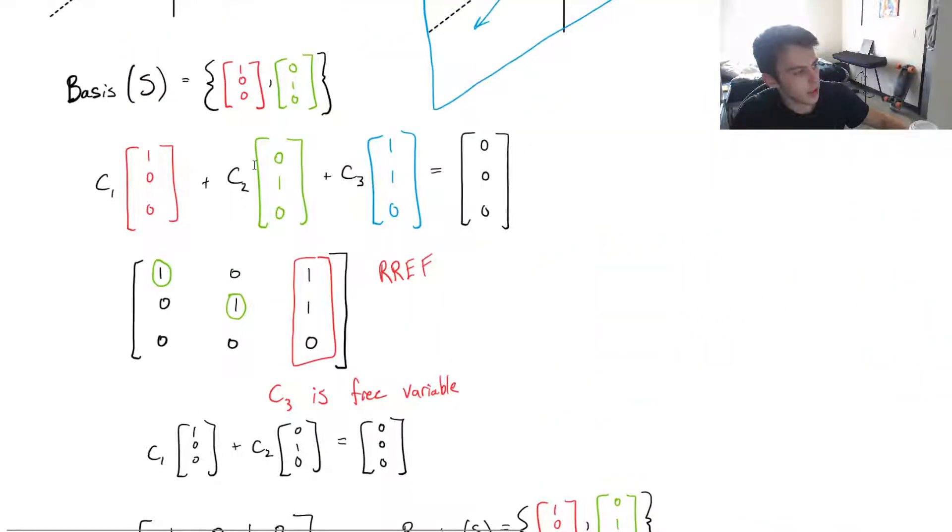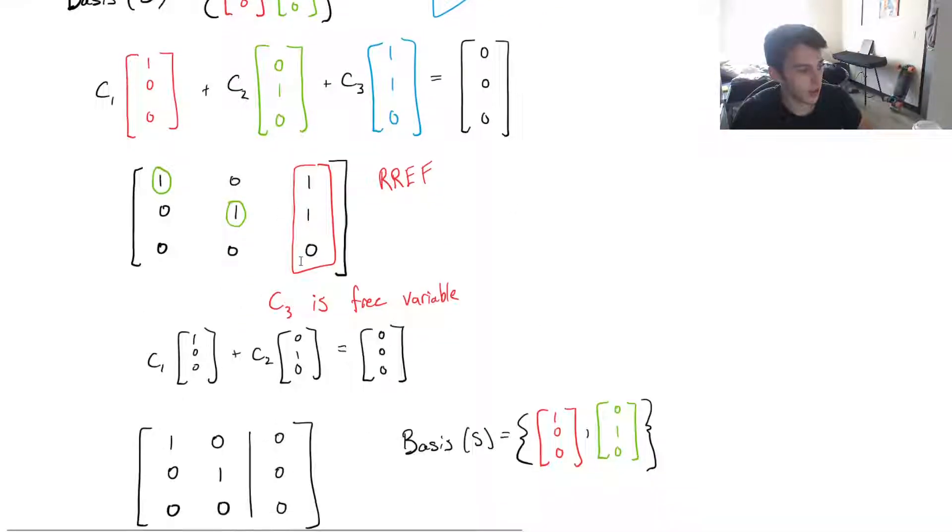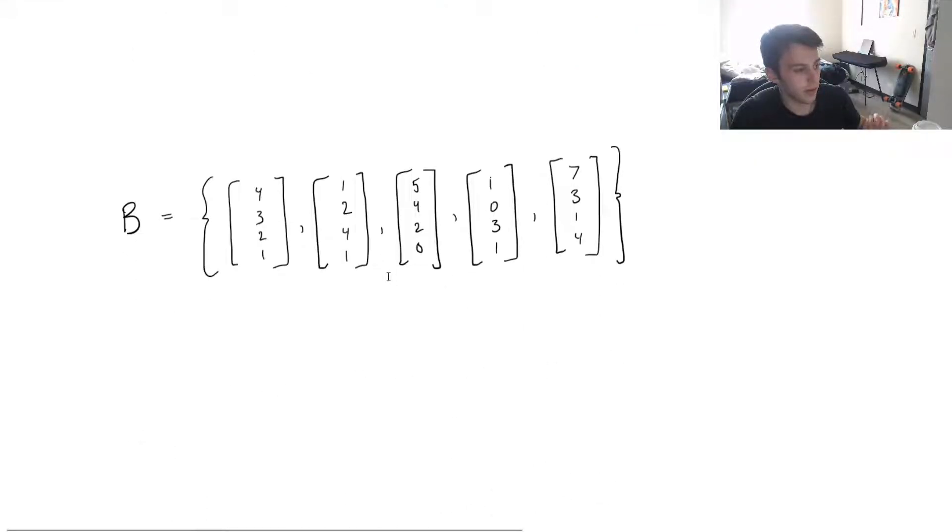So the general process, we're just going to set up a matrix with a homogeneous system. Each column of that matrix will be our vectors in the set. And then we'll row reduce it, and we'll see that any column that has a free variable will remove that vector. And then the resultant vectors in the set, after I remove the free variables, then those will be the linearly independent set. So let's apply that to a little bit of a trickier example.